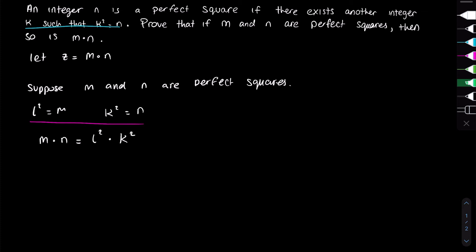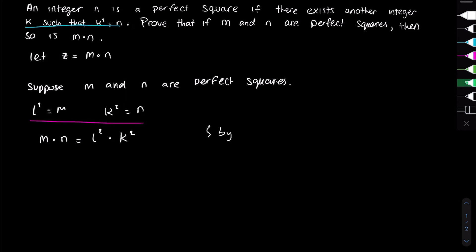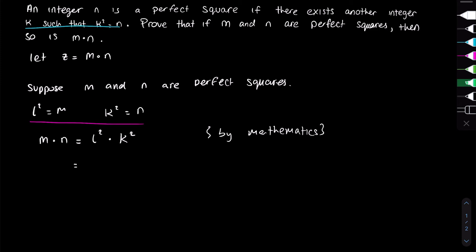So now we have l² times k². We have a number squared times another number squared. By mathematics, we know this equals (l times k)² - this is just a rule.